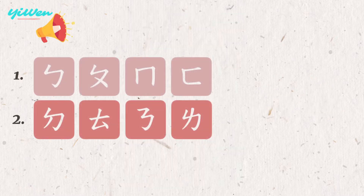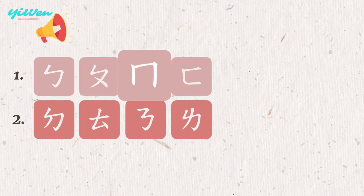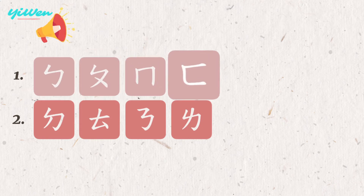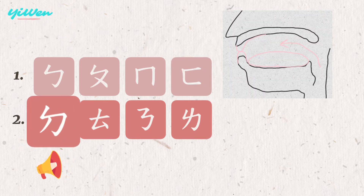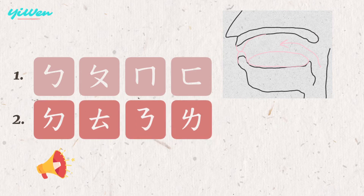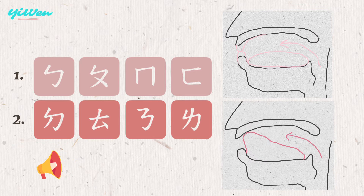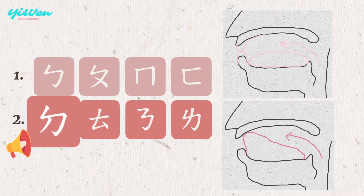Take the first two groups for example: b, p, m, f — these use the lips and upper teeth. The second group uses the tip of the tongue to touch the back of the upper teeth. For the pairs within a group, for example b and p, or t and d — each pair shares the same place of articulation but differs in aspiration.